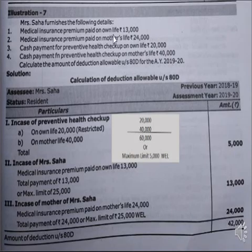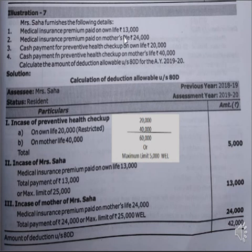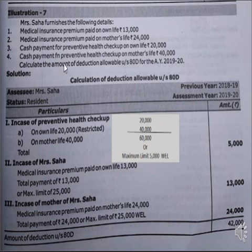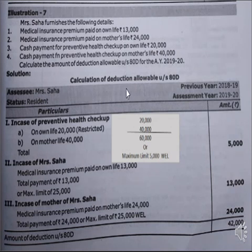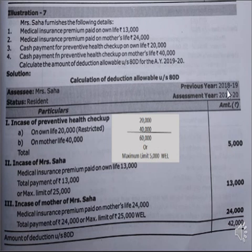Problem number seven: Mrs. Saha furnishes the following details. Medical insurance premium paid on own life: 13,000. Medical insurance premium paid on mother's life: 24,000 eligible. Cash payment for preventive health checkup on own life: 20,000 eligible. Cash payment for preventive health checkup on mother's life: 40,000. Total paid is more but maximum they can claim is only 50,000. Write computation of allowable deduction under Section 80D. Name of assessee: Mrs. Saha. Residential status: Resident. Assessment year 2019-20, previous year 2018-19.